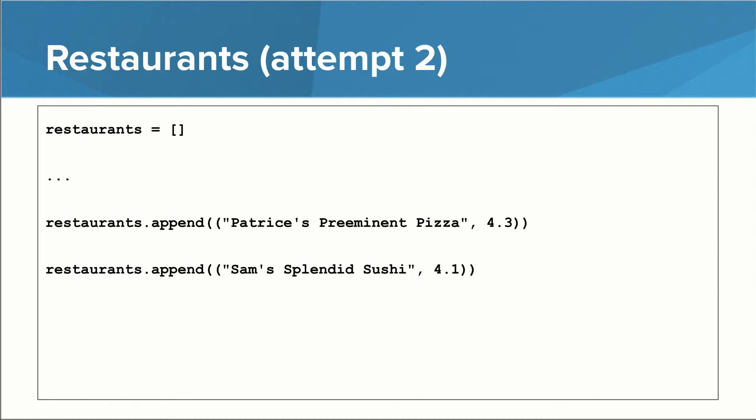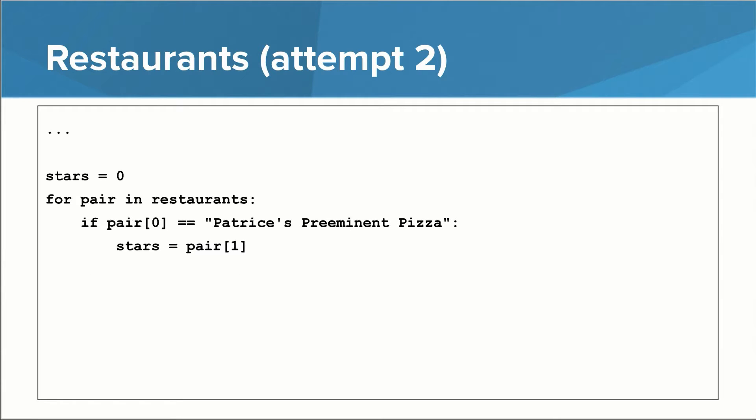Here's another approach. We could store a list of tuples, where the zeroth thing in each tuple is the restaurant name and the first thing is the rating. Now we only have one list to worry about. The downside is that looking up a particular restaurant's rating is still pretty difficult. We have to use a for loop to examine every tuple and find the one whose zeroth thing is the name of the restaurant we care about.